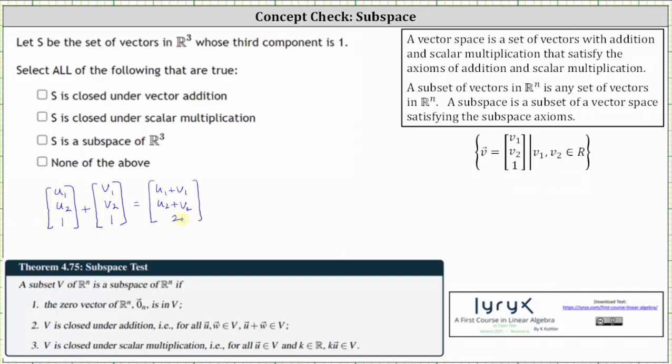Notice the sum is not in the subset S because the third component is not one, it's two, which means S is not closed under vector addition. We do not check the first box. Since it failed this axiom, we also know that the subset S is not going to be a subspace for R3.